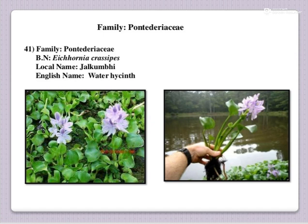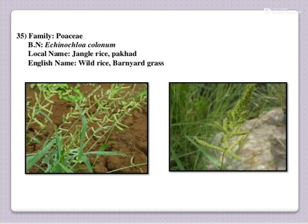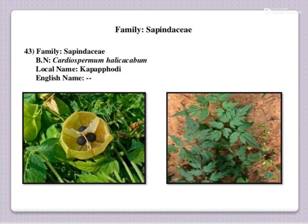Family is Pontederiaceae and it is an aquatic weed, mostly occurring in water areas. The next one is jungle rice. Common name is jungle rice. English name is wild rice and barnyard grass. Botanical name is Echinochloa colona, family Poaceae.